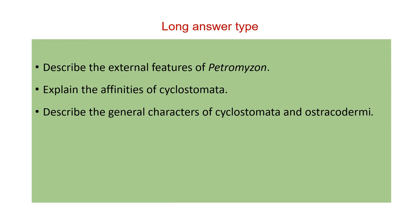In this section, we will take long answer type questions. The first question is: describe the external features of Petromyzon. Next is: explain the affinities of Cyclostomata. And the third is: describe the general characters of Cyclostomata and Ostracodermi. These are the explanatory questions, and you have to explain these questions in detail.